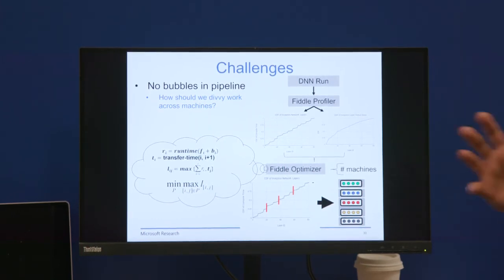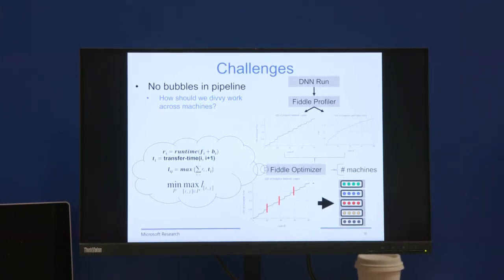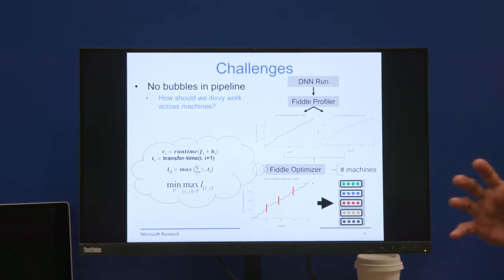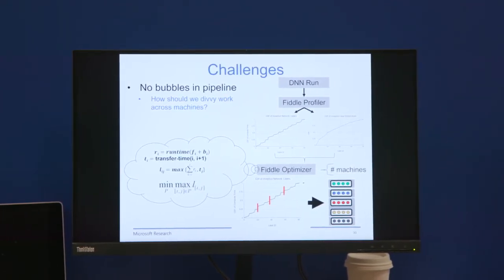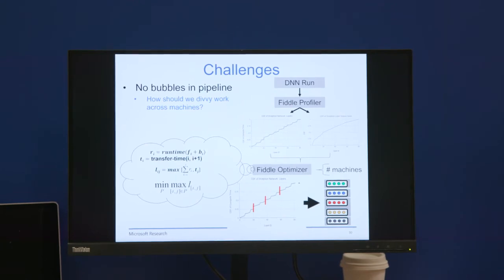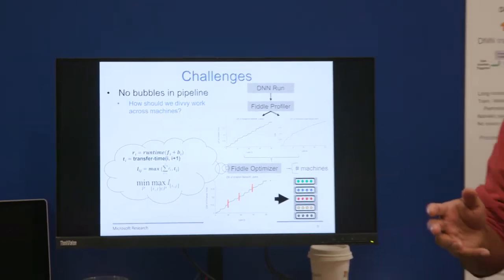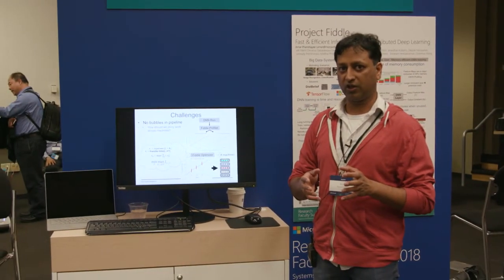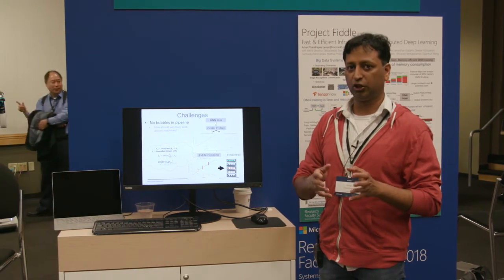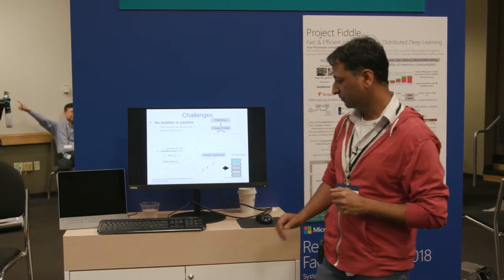And the speedups that we observe, because of this combined pipelining, is significant. We get up to 5x speedup for various tasks that we've tried this out for, be it image classification or RNNs, for example, sequence to sequence models that do video to text transcription.